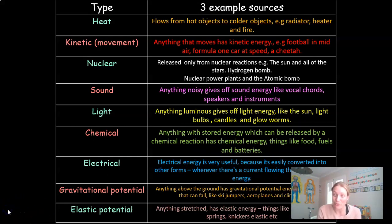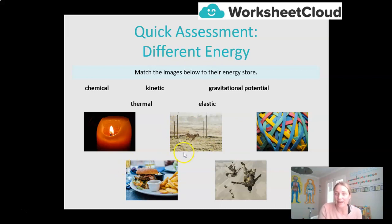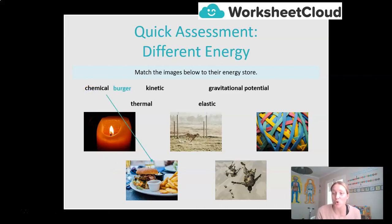So that gives you a good recap of those nine. Let's see if you can match the energy type to an image. I have different pictures: a candle, a nice plate of burger and chips, a very fast running cheetah, someone doing a skydive, and a big ball of elastic bands. Pause your video and see if you can match the correct energy type to the correct photo. Let's see if you got them right. Chemical energy is the burger — it is a store of energy that is released through the chemical reactions that occur when I eat it.